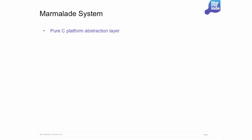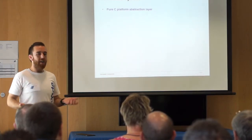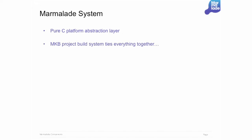The core bit of Marmalade is the Marmalade system layer. It's a pure C platform abstraction layer. It gives you access to things like accelerometer, GL rendering, files, memory, all the basic things you'd expect, and then some higher-end things like camera access and access to native file pickers. We have a build system called MKB that ties everything together — configure, build, deploy and so on. We bundle the GCC toolchain so that everything is compiled with one toolchain whether you're using a Mac or a PC, whether you're targeting device X or Y. You're building this one single binary.